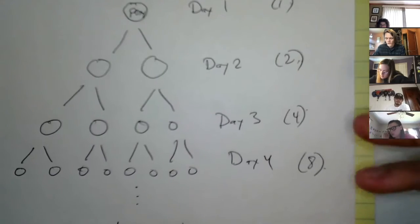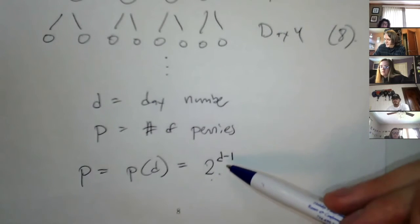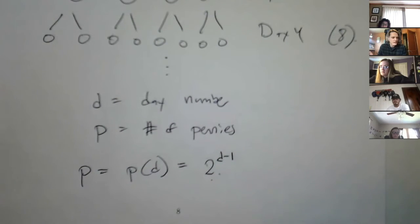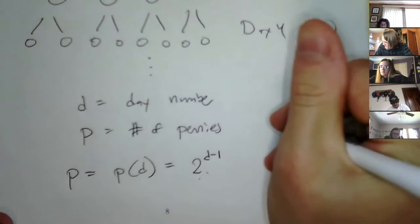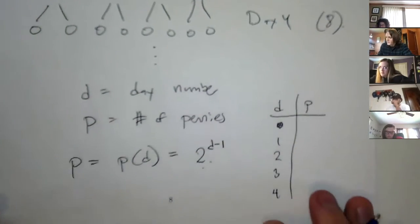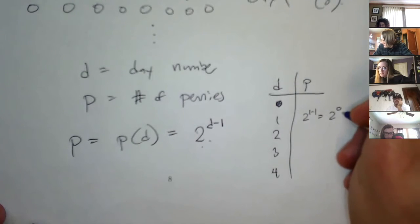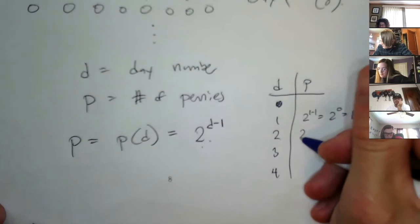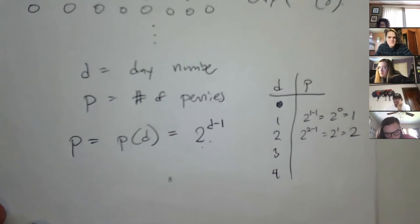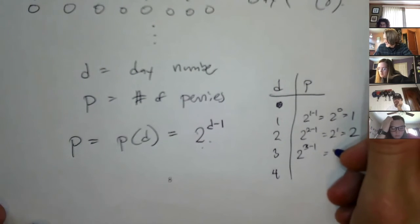I want it to be that when I plug in d equals 1, I get 1 penny. Let's check with a table. When I plug in 1, I get 2 to the (1 minus 1), which is 2 to the 0, which is 1 — good. When I plug in 2, I get 2 to the (2 minus 1), which is 2 to the 1, which is just 2. You've got to do it like this because you started with one penny — if you started with two pennies, you wouldn't need the minus 1.